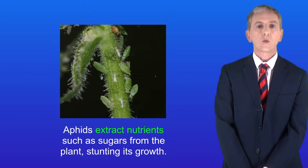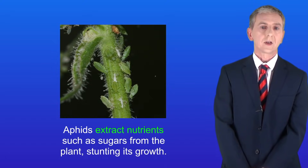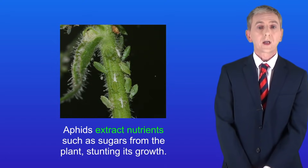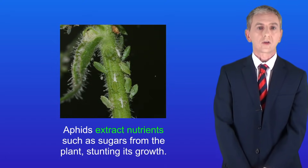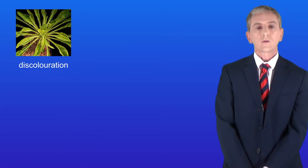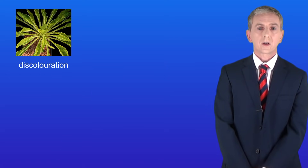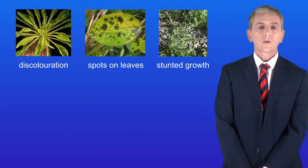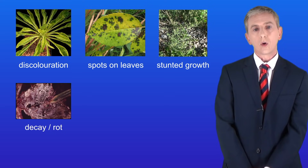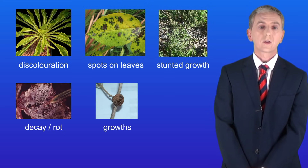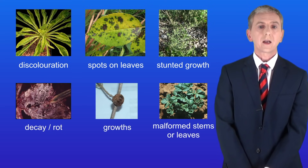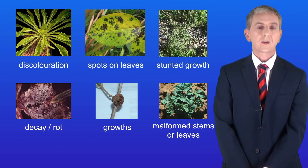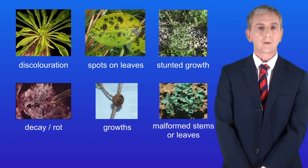So there are several ways that we can diagnose plant diseases. We can look for insects such as aphids, discoloration, spots on leaves, stunted growth, decay or rot, growths, and finally malformed stems or leaves.